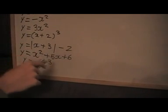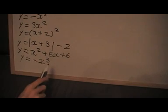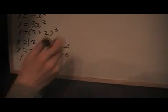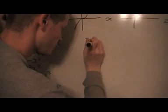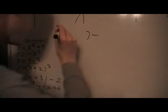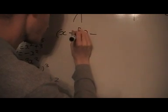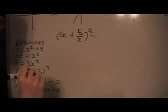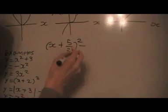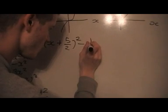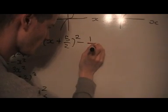Let's have a look at the next example. This example we'll complete the square. You should know how to complete the square, so I'm just going to write this expression in complete the square form. It's going to be (x + 5/2) squared minus 1/4.